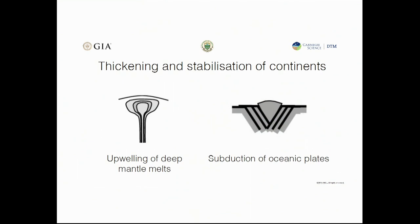How do these continents maintain their long-term stability? There's still quite a bit of debate in the literature about whether the thickening of these continents and the establishment of their thick cratonic keels is through deep processes — such as upwelling of mantle melts in a mantle plume — or through subduction of oceanic plates, more superficial processes, and recycling of oceanic crust. Both processes are thought to contribute towards continent stability and the formation of these old cratons.